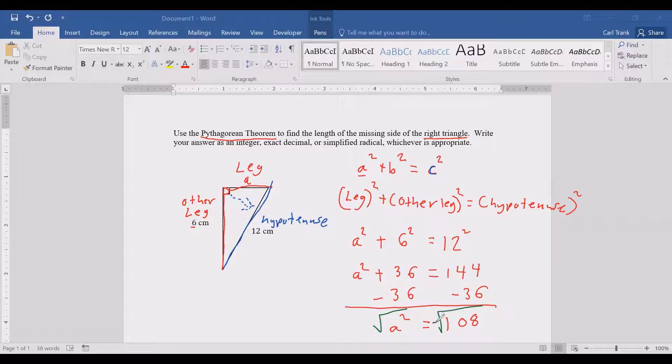We do not need to put a plus and minus square root this time because we are finding a side of a triangle and the side of a triangle cannot be negative. The square root and the square will cancel leaving us with A equals square root of 108.